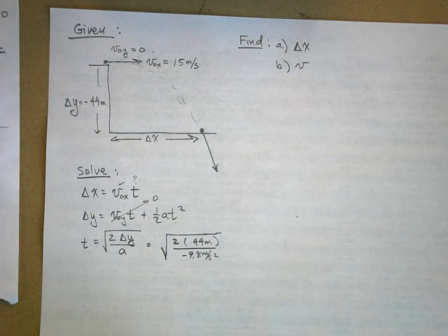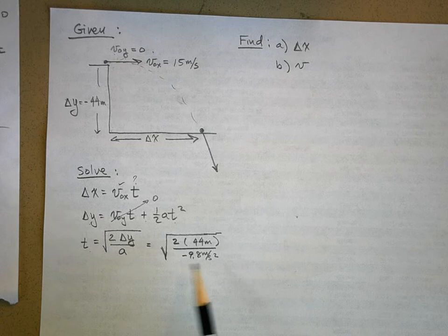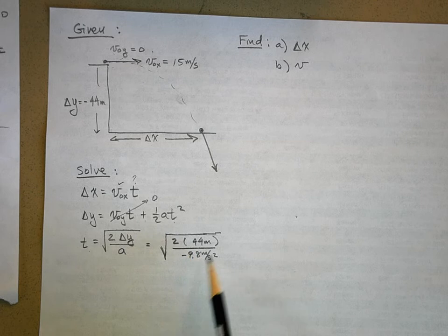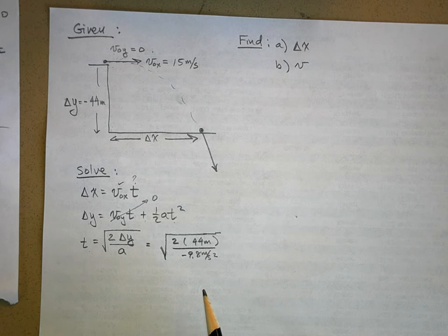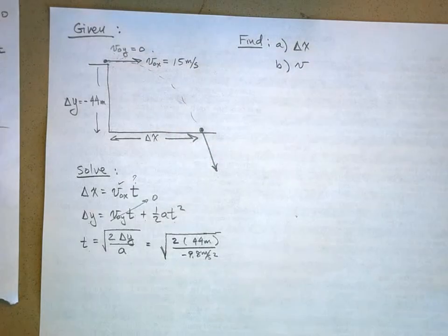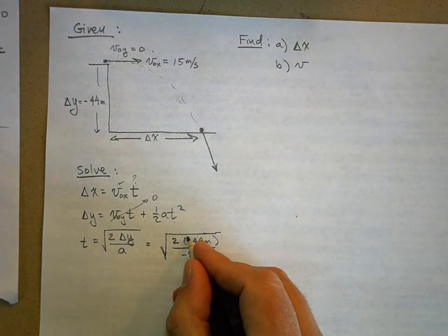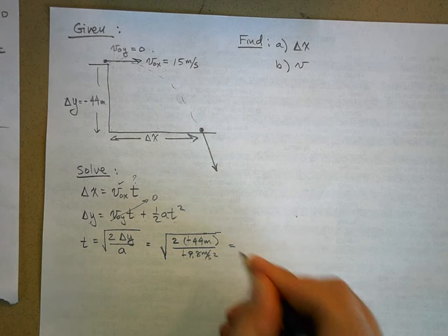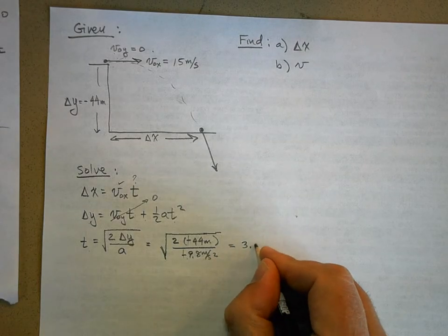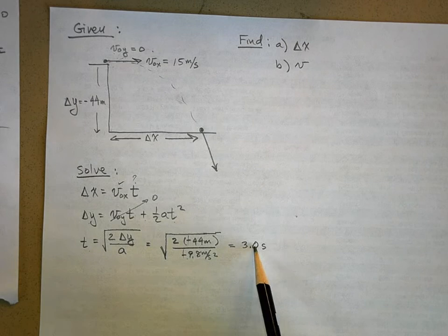I deliberately left off the negative to show the most common student mistake. If you get a negative number inside a square root, you can't take the square root of a negative number — there are no imaginary numbers in this class. It probably means you left a negative off accidentally. The 44 meters is negative, the negatives cancel with the acceleration's negative, and when you plug that into your calculator you get 3.0 seconds.